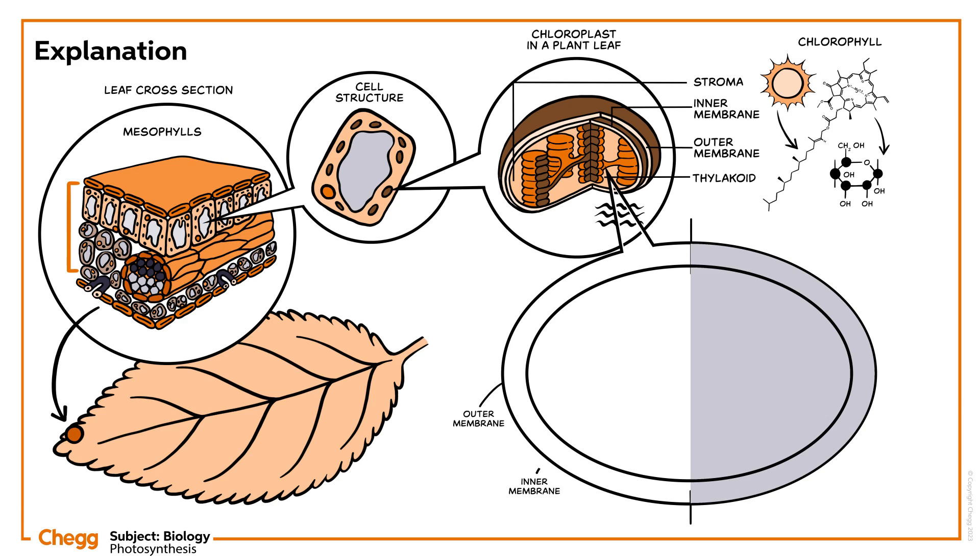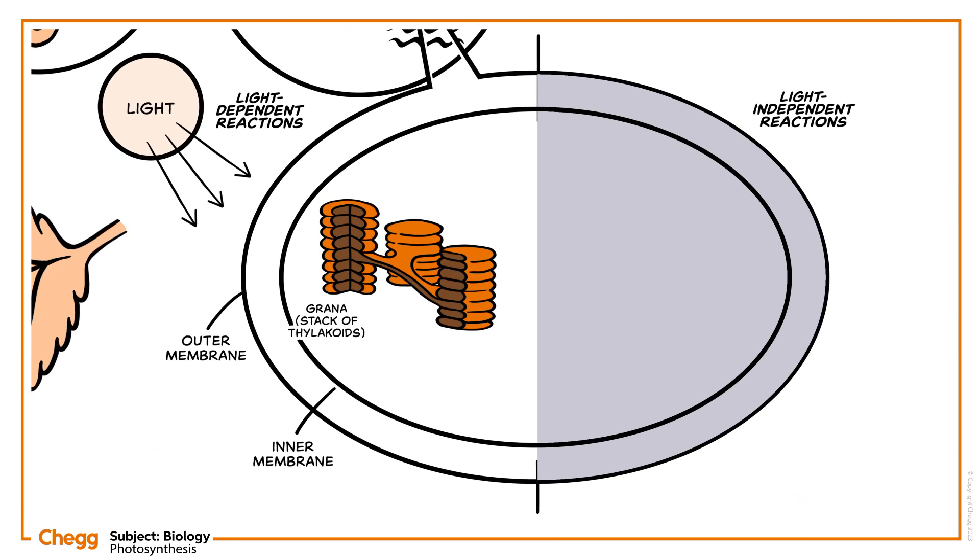The two stages in photosynthesis are light-dependent and light-independent reactions. The light-dependent reactions require a constant supply of solar energy and take place in the membrane of the thylakoid.